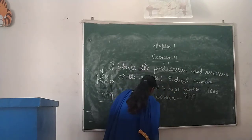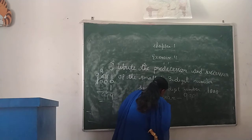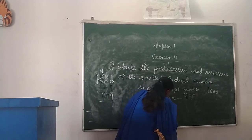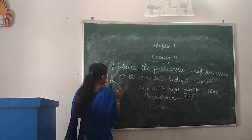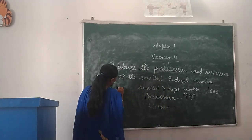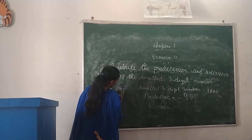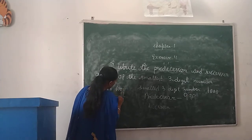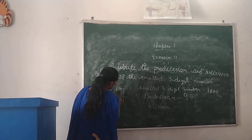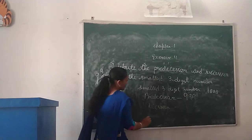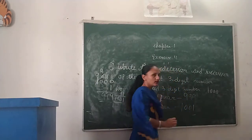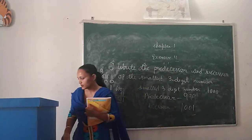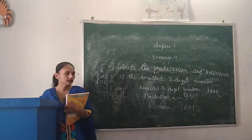For the successor, we add 1. 1,000 plus 1. 0 plus 1 is 1, and the other digits stay the same. So the successor is 1,001.